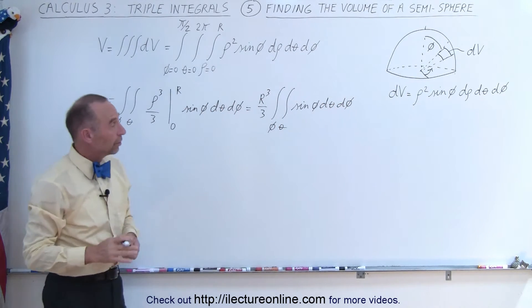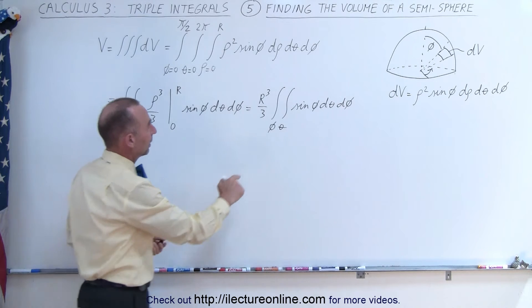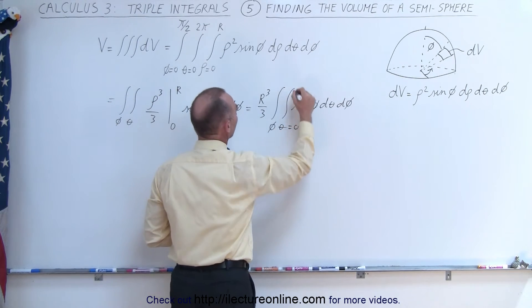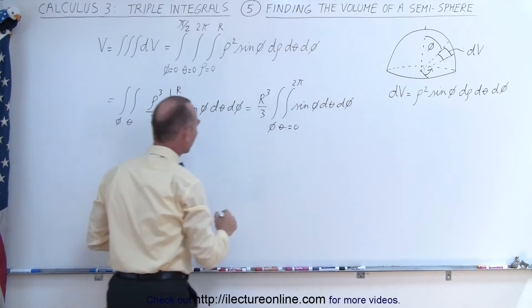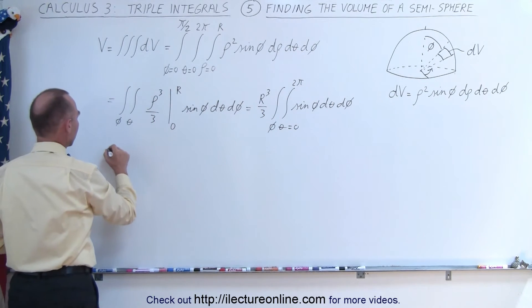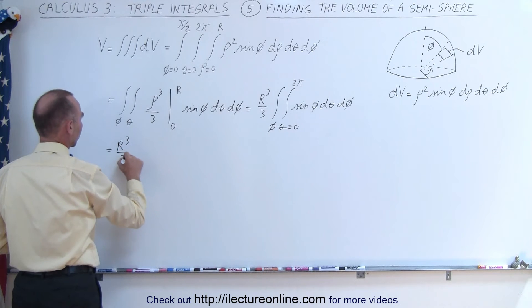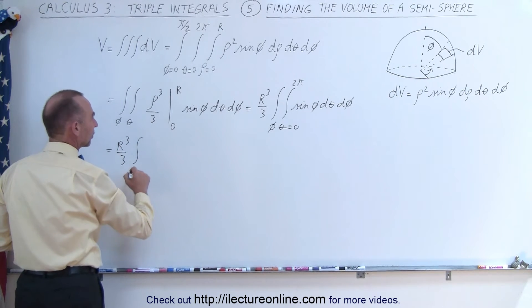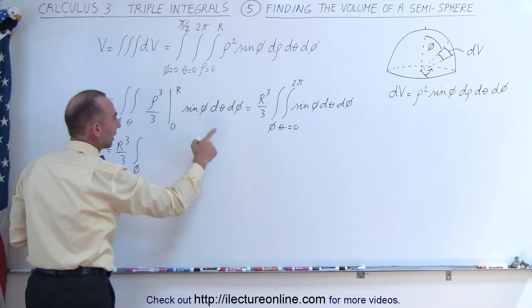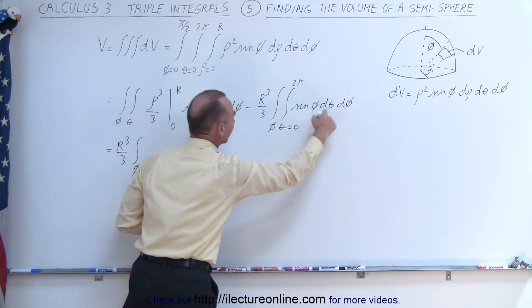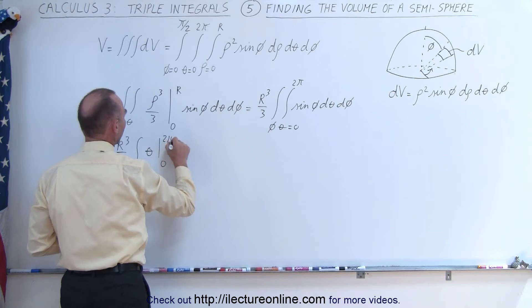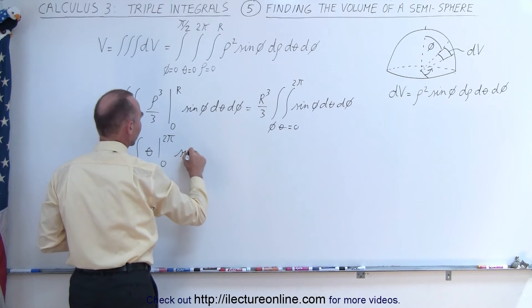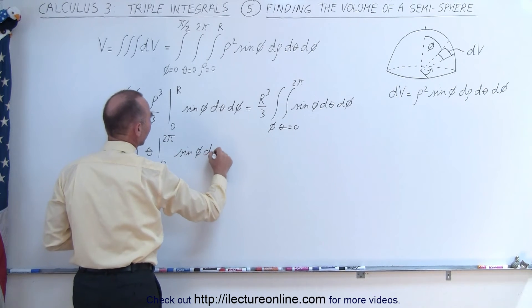And so our next integral is going to be over theta, and theta is going to go from 0 to 2 pi, all the way around the sphere. And when we integrate that, we get the following. This is equal to r cubed over 3, we'll have a single integral left over phi, and theta integrated is going to become theta evaluated from 0 to 2 pi. We still have the sine of phi and d phi left.